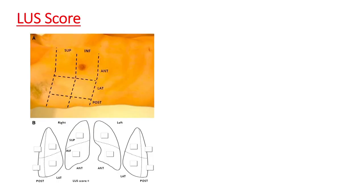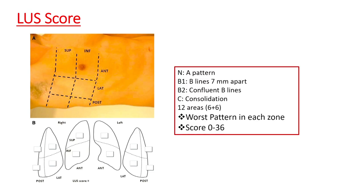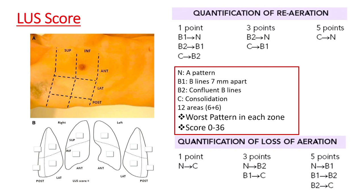This semi-objective figure is what's called the ultrasound score, based on what pattern we see in which part of the lungs. If you have a normal pattern, that's given a specific score; as the pattern changes, the score becomes worse or better. The re-aeration score is used when calculating the effects of recruitment maneuvers — should we do recruitment for all? No. But which patients to recruit? Ultrasound can tell you whether a patient is actually recruitable, and then you go ahead with maneuvers accordingly.